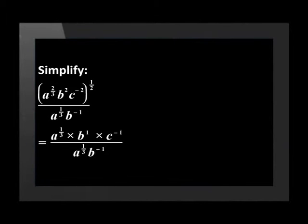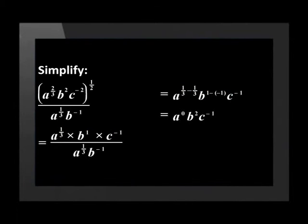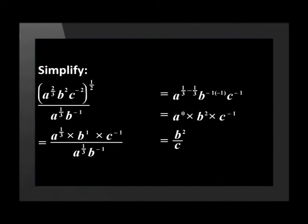The denominator stays the same for now. We've done as much simplifying as we can in the numerator and denominator so let's gather our like bases. This will give us A to the power of 1 third minus negative 1 times by C to the power of negative 1. Now we will have A to the power of 0 times by B squared times by C to the power of negative 1. To finish off this problem all our exponents need to be positive. We can also see that A is to the power of 0 which is equal to 1, so we don't need to show it in the answer. The final answer will then be B squared over C.